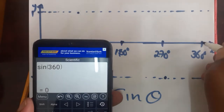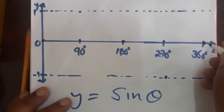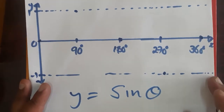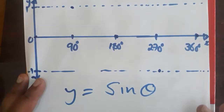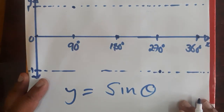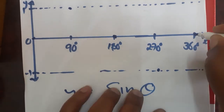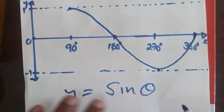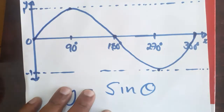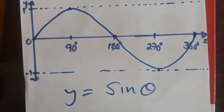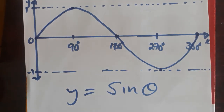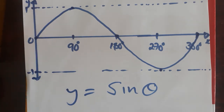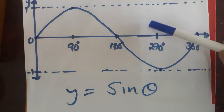Take note of the dots we have created — one, two, three, four, five dots. You are going to draw a curve passing through these five points. It has to be drawn nicely. You can see that the sine graph oscillates between negative one and positive one.